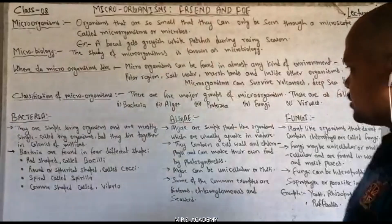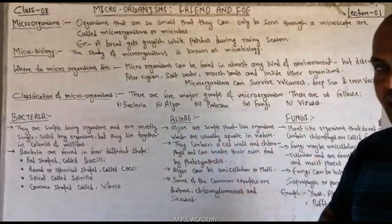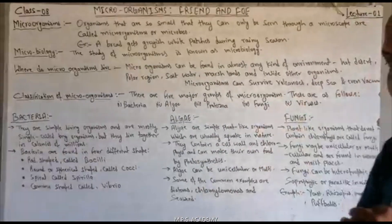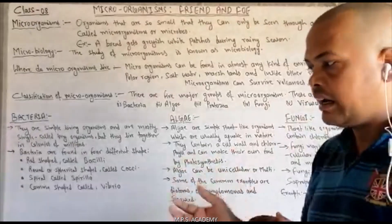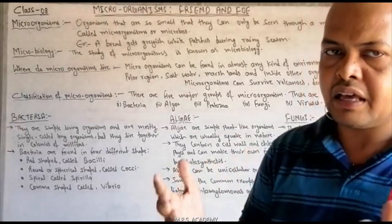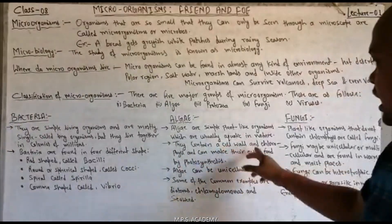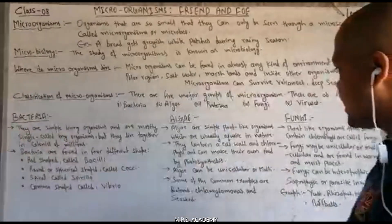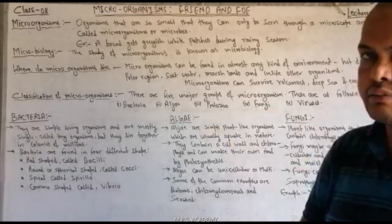Now let's talk about algae. Algae are simple plant-like organisms which are usually aquatic in nature. Jo algae hota hai, woh simple plant-like organism hota hai, yaani plant ki jaisi ek sadharan organism hoti hai, jo usually aquatic nature ki hoti hai — yaani gel ya taral avastha mein paayi jaati hai. They contain a cell wall and chlorophyll, and can make their own food by photosynthesis. Iske andar cell wall hoti hai, chlorophyll ke kaaran yeh apna bhojan khud photosynthesis ki madad se bana lete hain.